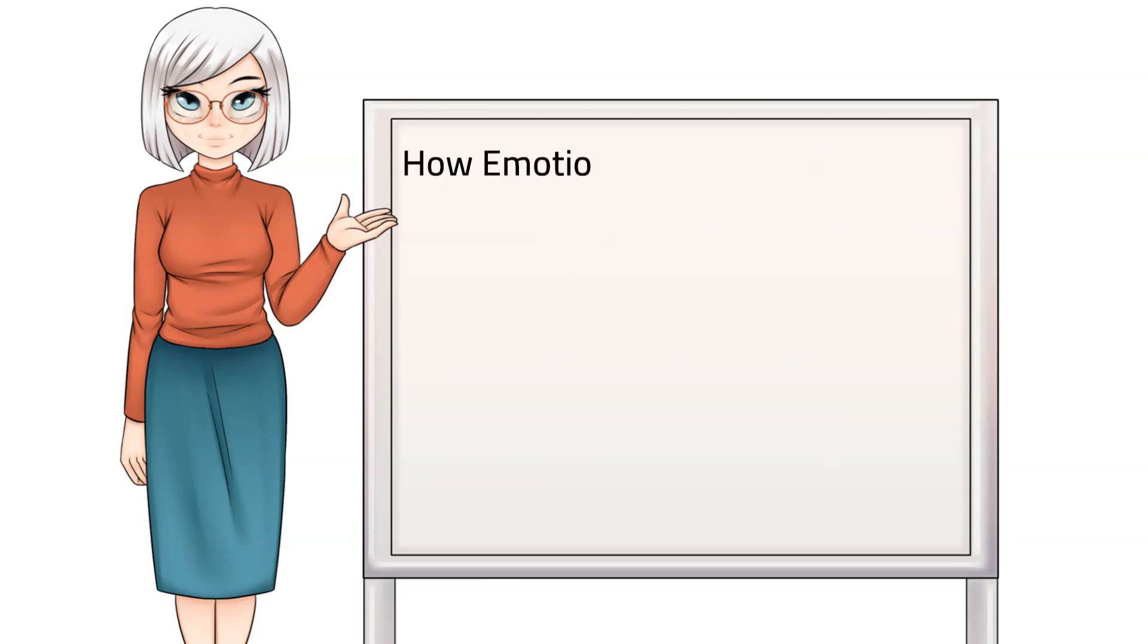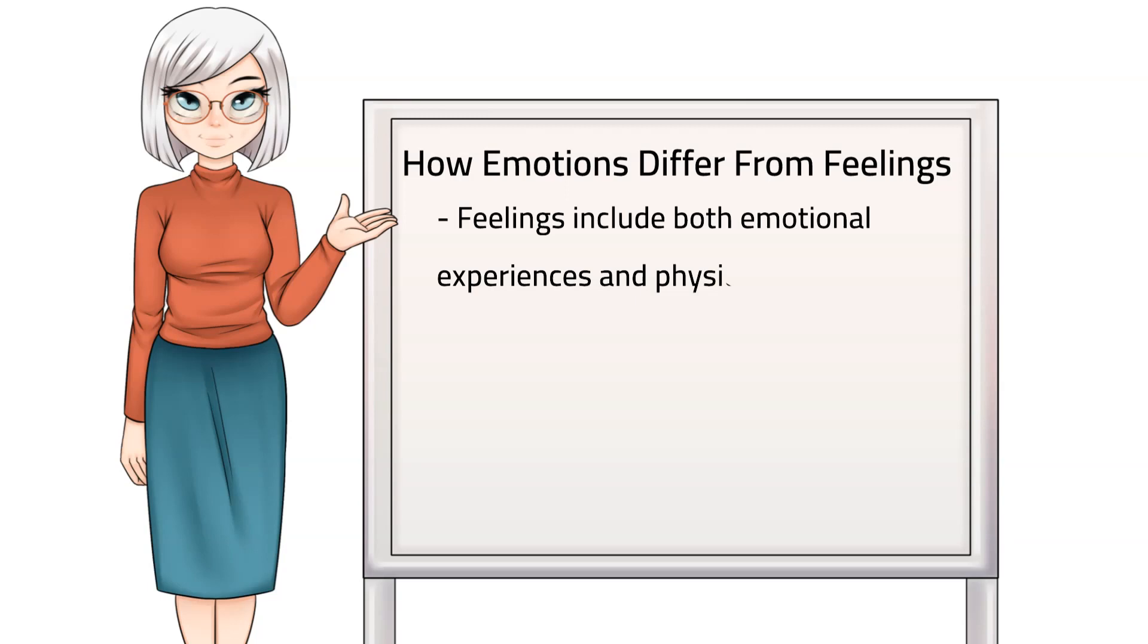How are emotions different from feelings? We tend to use the word feeling interchangeably with the word emotion, even though feelings and emotions are not the same things. Feelings include both emotional experiences and physical sensations. For example, we might say that we're feeling hungry, feeling tired, or feeling itchy, even though these are not emotions. But we can also feel emotions. For example, we may feel upset, angry, or sad. All of these considerations make emotion a very complex thing to talk about and understand.